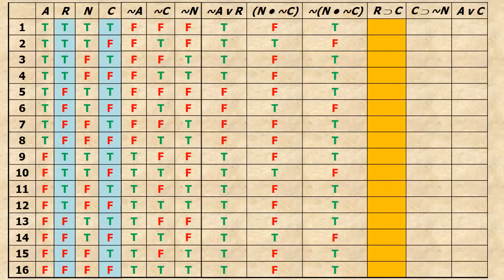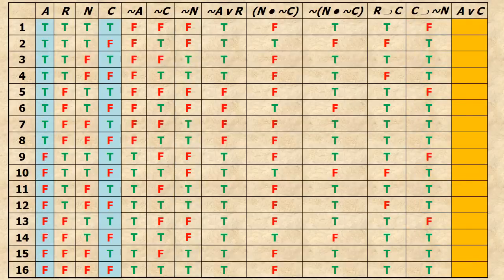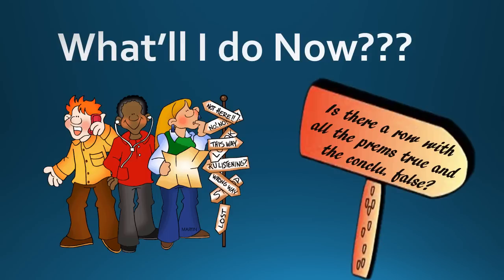For R horseshoe C, I look at the columns in blue — R is true and C is false only in rows 2, 4, 10, and 12, so all other rows turn out true by the definition of the material conditional. For C horseshoe tilde N, I find where C is true and tilde N is false — that happens in rows 1, 5, 9, and 13 — the conditional is true otherwise. For the conclusion A wedge C, I only put falsehoods where both A and C are false. Now we've got a column for each premise and a column for the conclusion.